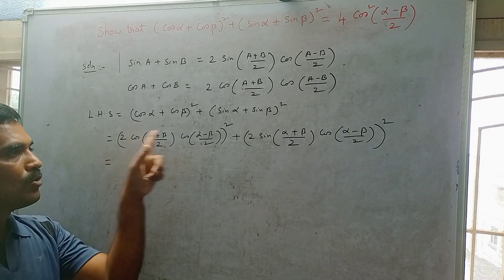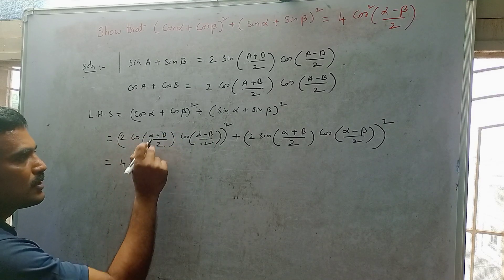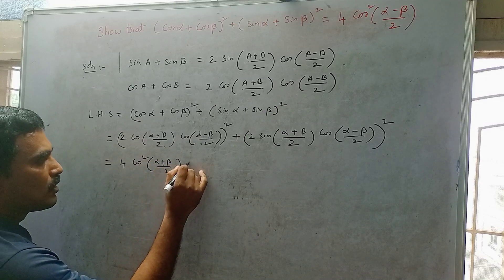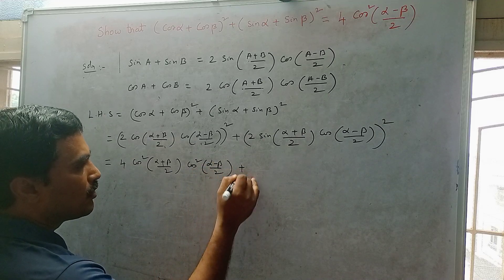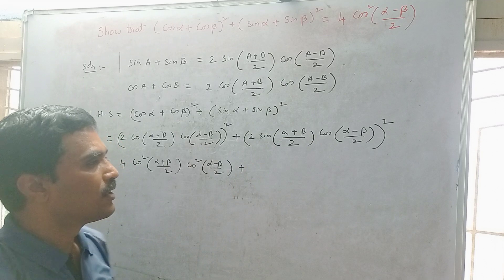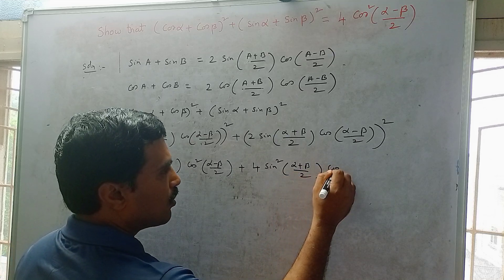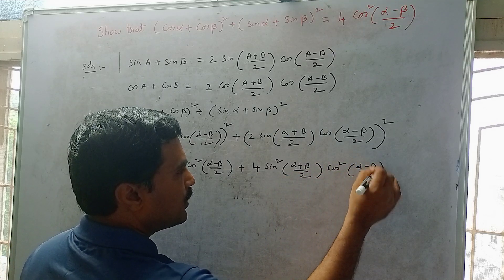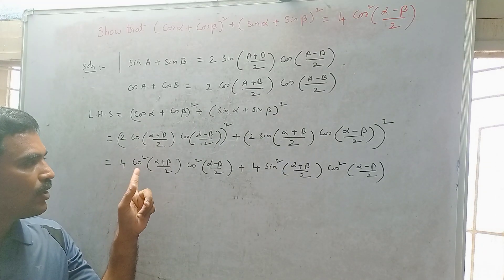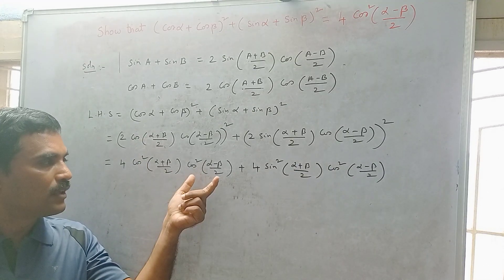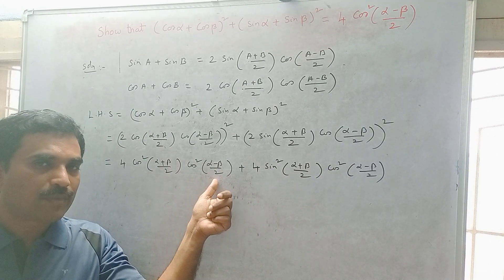Now squaring each term: 2² = 4, so we get 4 cos²((α + β)/2) cos²((α − β)/2) plus 4 sin²((α + β)/2) cos²((α − β)/2). If you look at these two terms, 4 is common and cos²((α − β)/2) is also common in both terms.